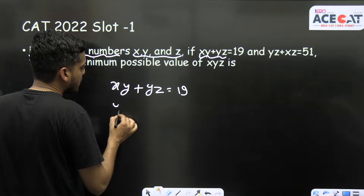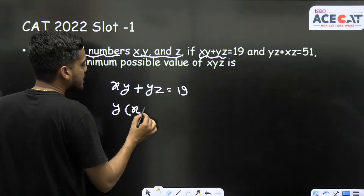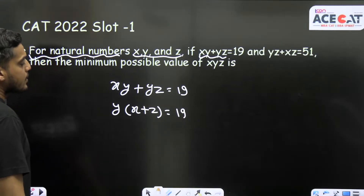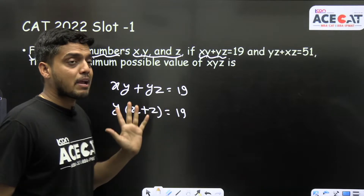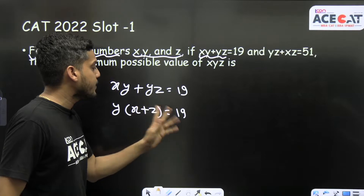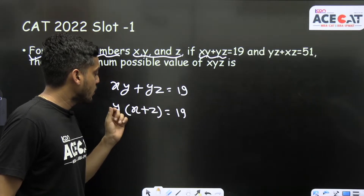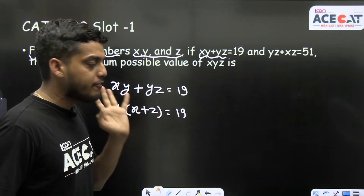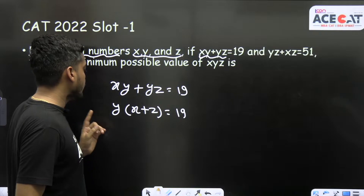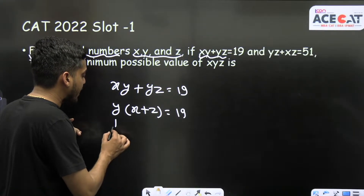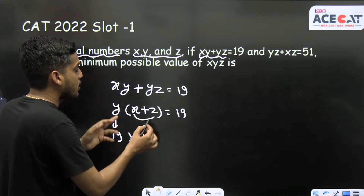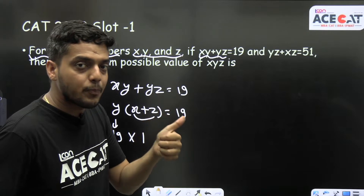If I take y common in the first equation, I get y(x + z) = 19. Now, 19 is a prime number, and we are getting a product of two numbers equal to 19. We can factorize 19 in only one way: 19 × 1 or 1 × 19. But I cannot take y = 19 and x + z = 1, because two natural numbers cannot sum to one.